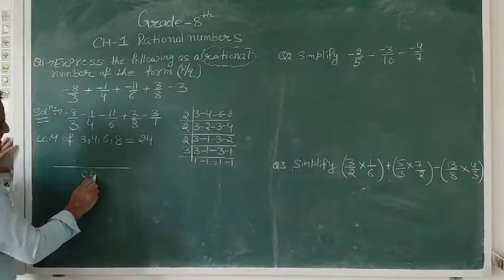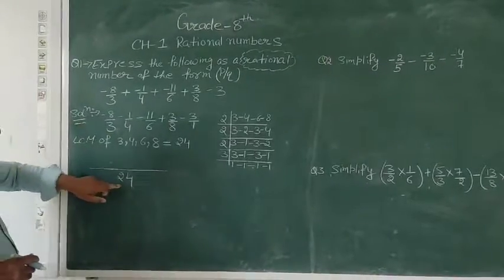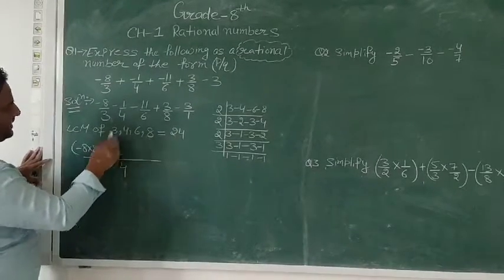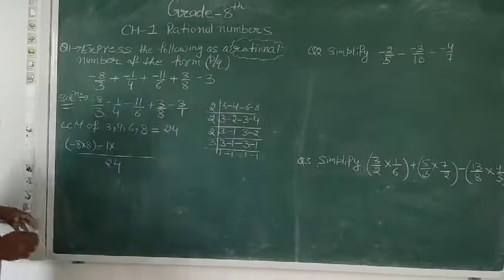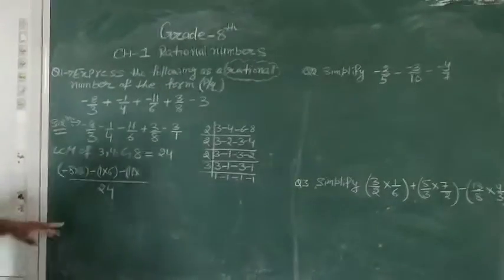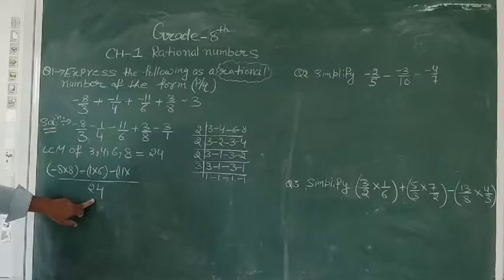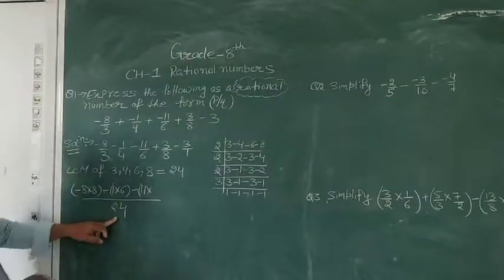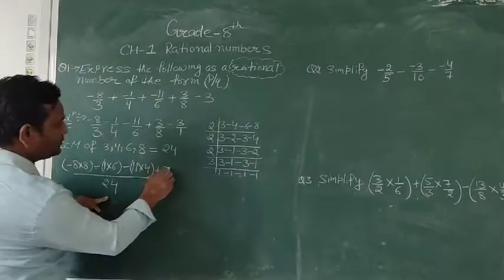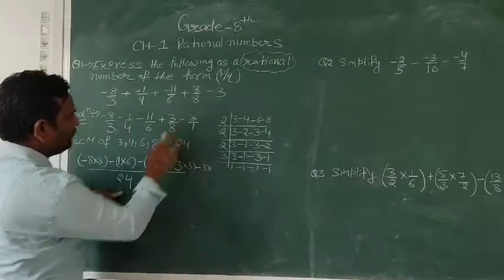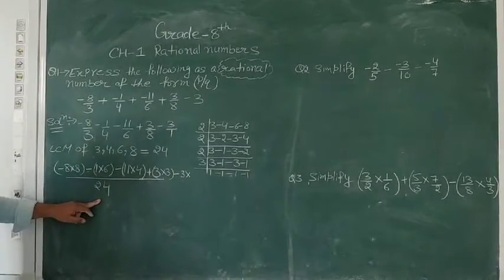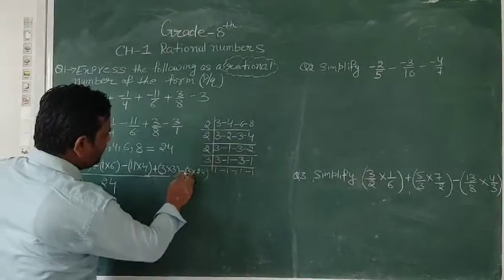Writing 24 as the common denominator: for 3, multiply by 8 to get 24, so minus 8 times 8 = minus 64. For 4, multiply by 6 to get 24, so minus 1 times 6 = minus 6. For 6, multiply by 4 to get 24, so minus 11 times 4 = minus 44. For 8, multiply by 3 to get 24, so 3 times 3 = plus 9. For 1, multiply by 24, so minus 3 times 24 = minus 72.